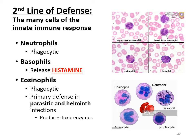The last thing to note on this slide is eosinophils. We often focus on bacterial infections, but eosinophils are the primary defense in parasitic and helminth infections — they produce enzymes that are toxic to these organisms. Whenever you see the word helminths, think worms. So eosinophils will be highly active if you ever have a worm infection. Make sure you're comfortable remembering that basophils are highly active in allergies and release histamine (a vasodilator), whereas eosinophils are highly active in parasitic or worm infections.